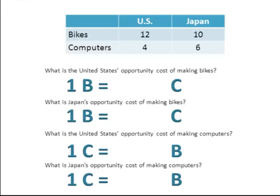Japan would have the absolute advantage in computers because they can produce the most, which indicates that they're the most efficient.